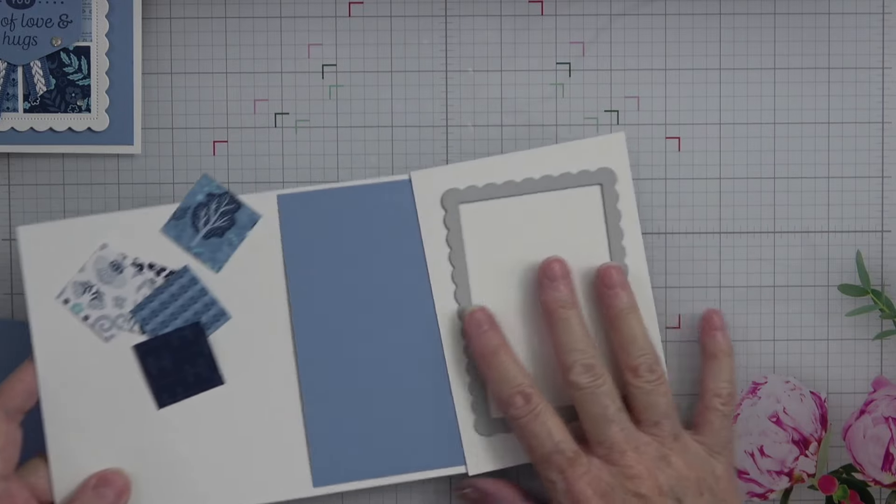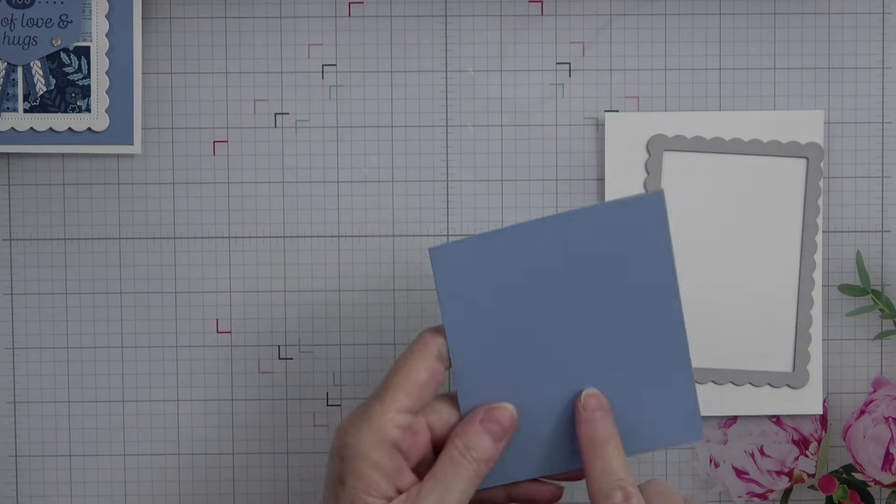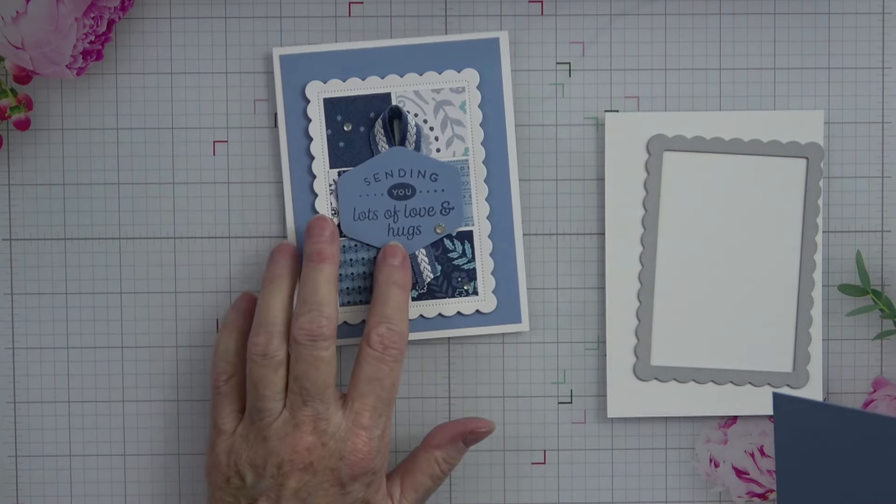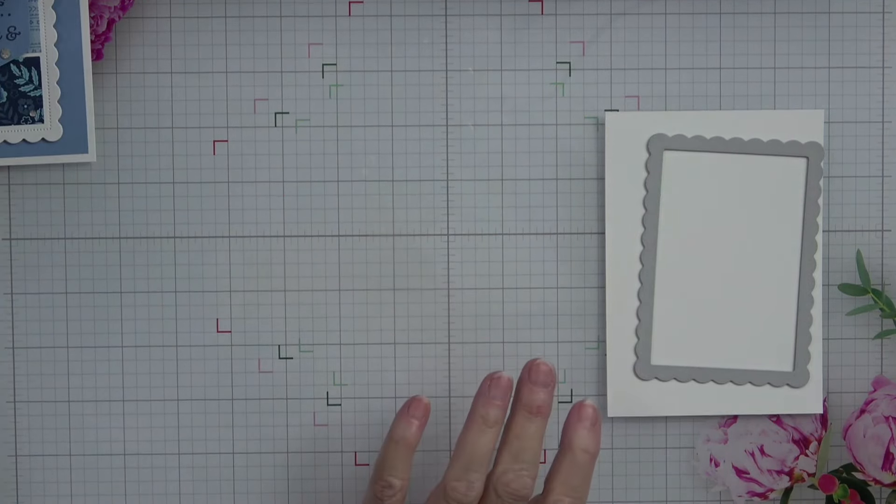And these all measure one and one fourth by one and one fourth and they work perfect on this frame. So let's get our die cut machine out and run that through and then we'll go ahead and put the card together. Also have a scrap piece of Boho Blue that we're going to use for our sentiment on the front.